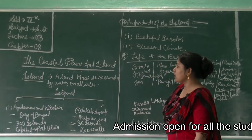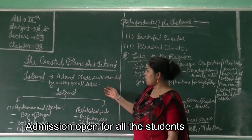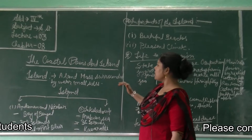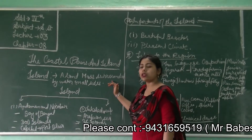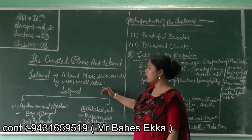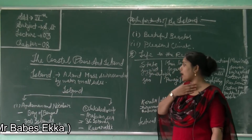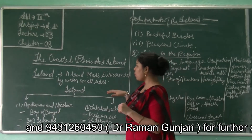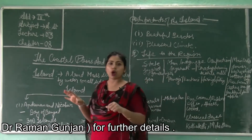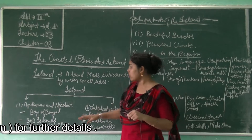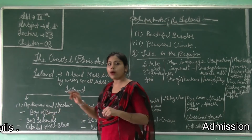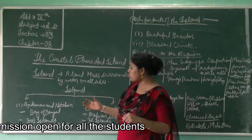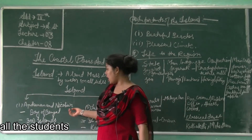We will see the islands of India. A landmass which is surrounded by water from all sides is called an island. In India, there are many islands, and there are two groups of islands. First is the Andaman Nicobar Islands and the second one is the Lakshadweep Islands. One by one we will discuss about these islands.